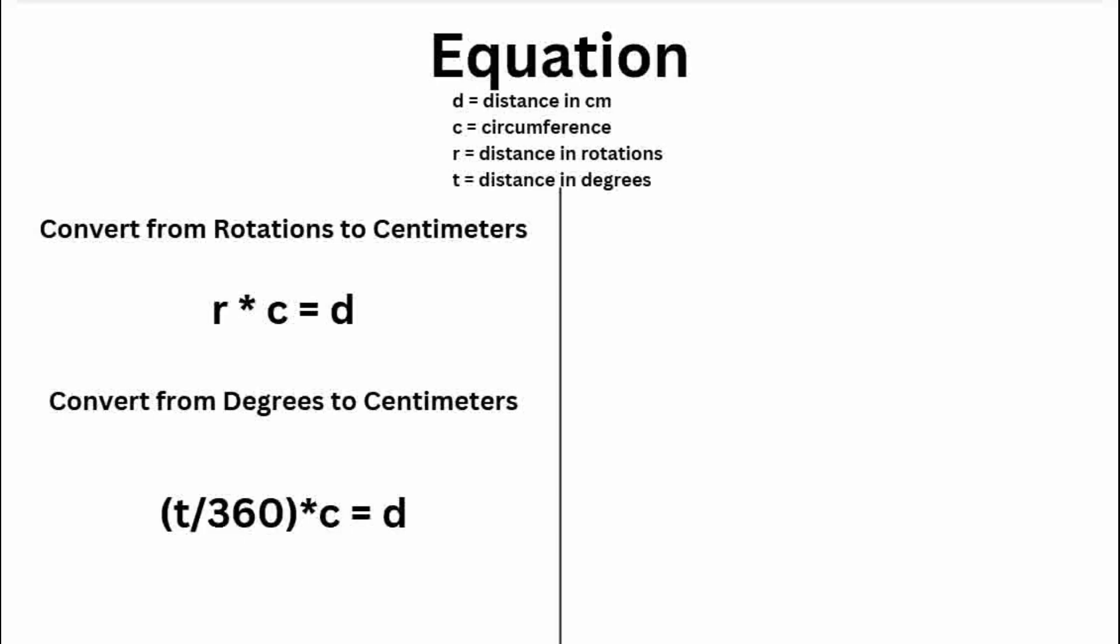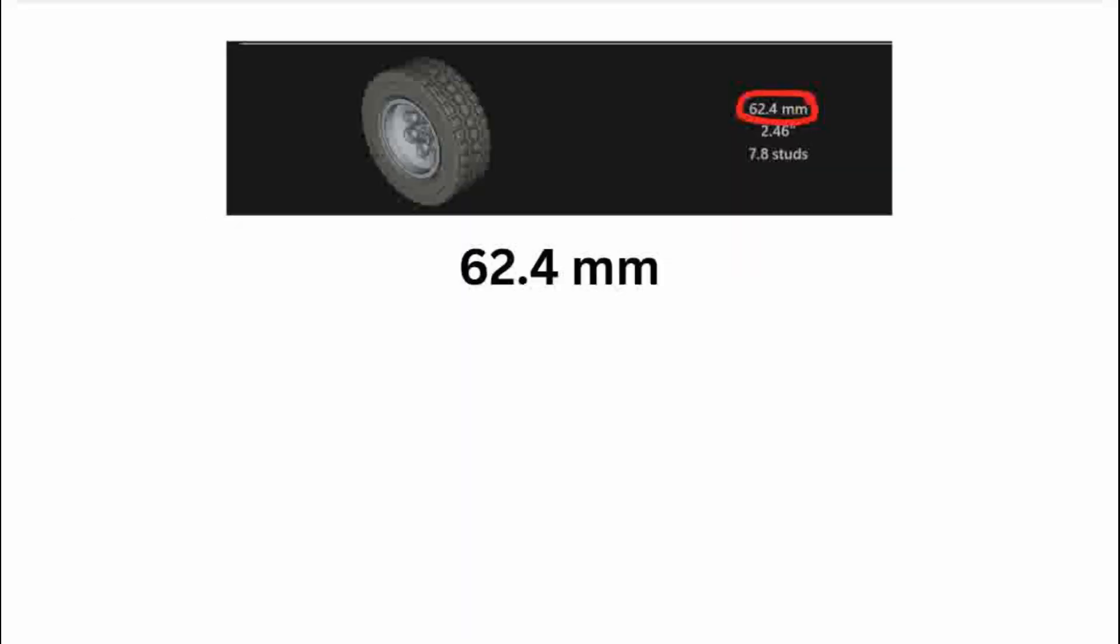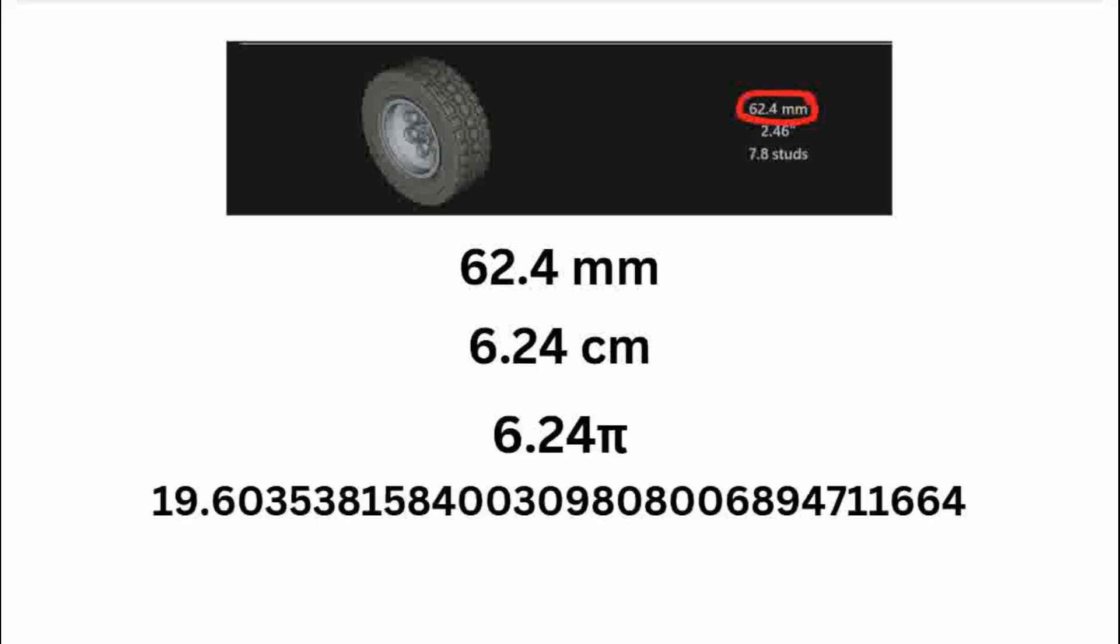The robot that we will test the code on has a wheel diameter of 62.4 millimeters officially, which is 6.24 centimeters. And we need to multiply it by pi to get the circumference. And you'll get this monstrosity of a number. And then you need to round it to 19.6. And this is the circumference of the wheel that we will use in our program.